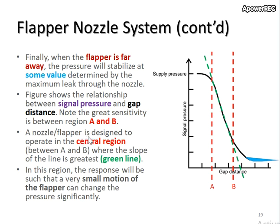A nozzle flapper is usually designed to operate in the central region, or between A and B, where the slope of the line is the greatest, as shown by the green line. This green line represents the slope. In this region, a very small motion of the flapper can change the pressure quite significantly.